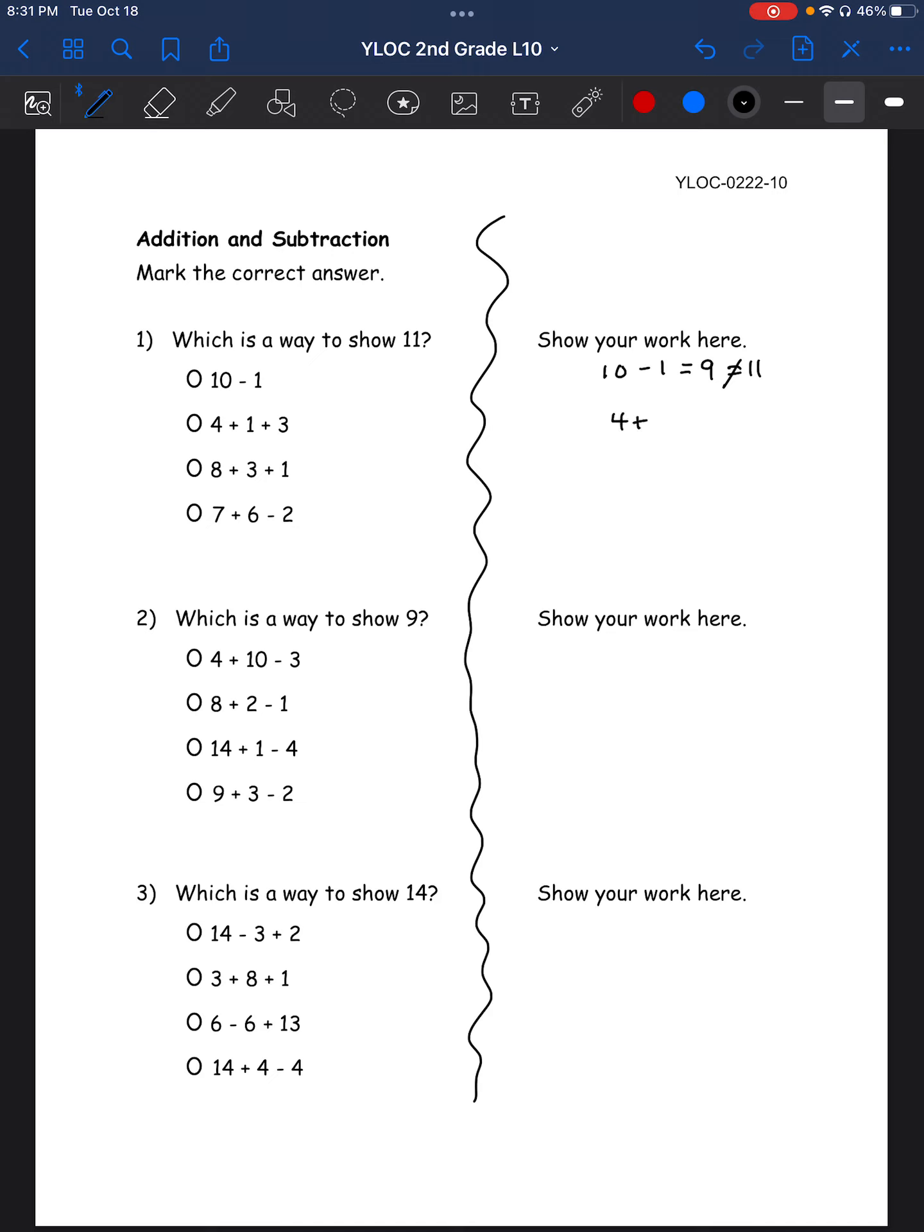Let's try 4 plus 1 plus 3. 4 plus 1 is 1 more than 4, right? So this is 5. Plus 3. What is that? 5 and then add 3. 6, 7, 8. So this equals 8, which does not equal 11. So that doesn't equal 11 either.